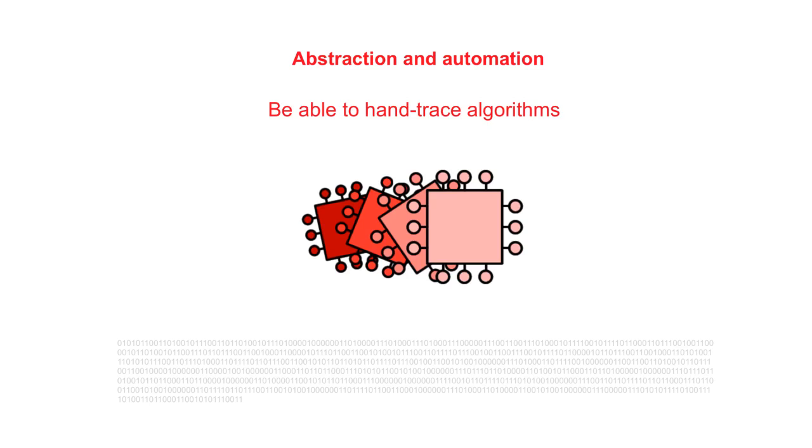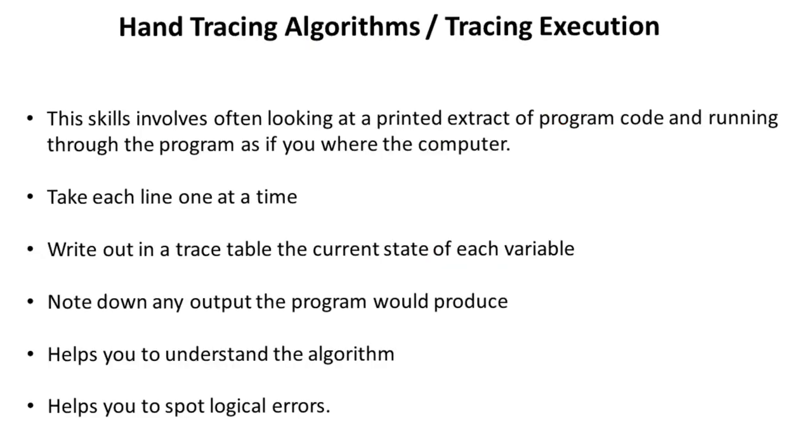In this video, we look at the importance of how to hand-trace algorithms. Hand-tracing algorithms, or what can be known as tracing execution, is a skill which involves looking at a printed extract of program code or program code displayed on a computer screen and running through the program manually yourself as if you were the computer.